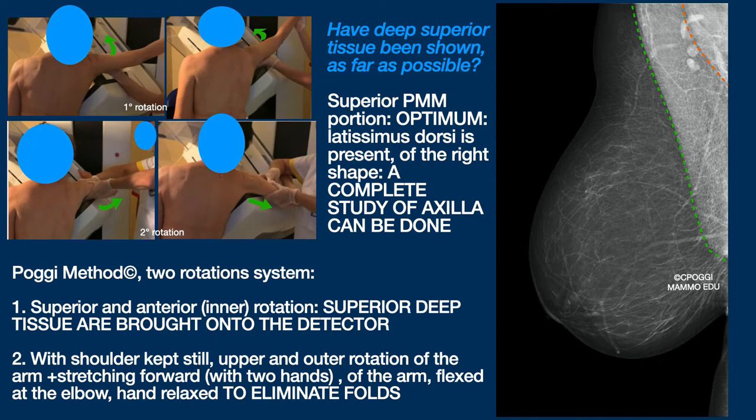This second rotation has to be followed by a forward stretching of the arm, elbow flexed and pushed down, hand relaxed. The purpose of this manoeuvre is to eliminate faults. The oblique you see here shows a perfect documentation of the deep superior tissues, which is not always possible to achieve, of course, but is something to strive for.